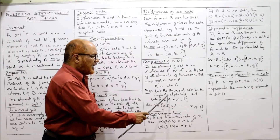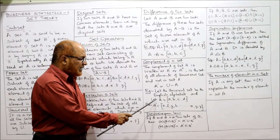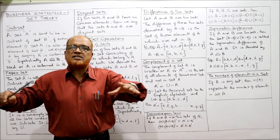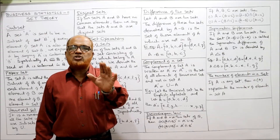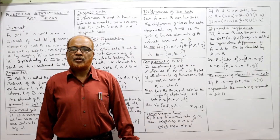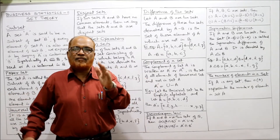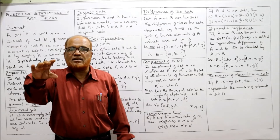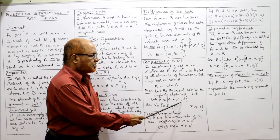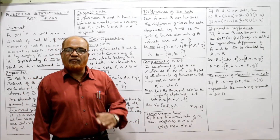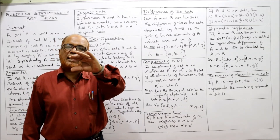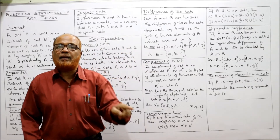Example for complement: let the universal set be all English alphabets A to Z — 26 alphabets in total. Let A = {A, B, C, D} — four elements. We want to find the complement of A, which means all elements of the universal set except the elements of A.